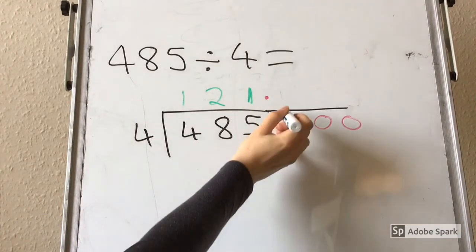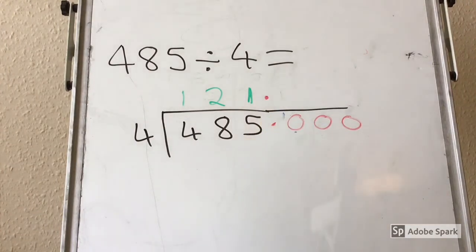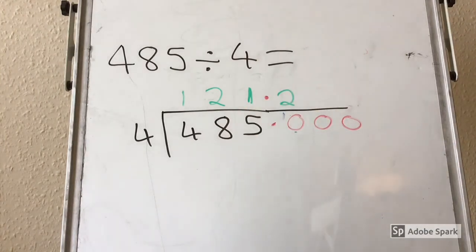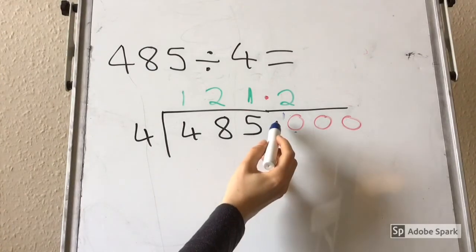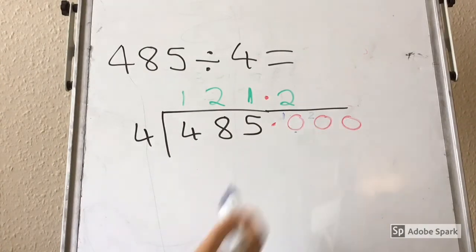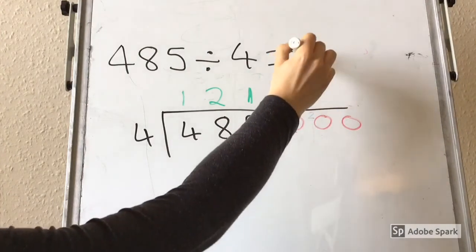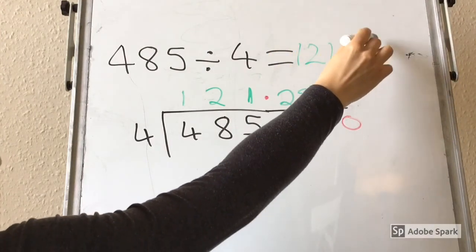You might have known that the decimal equivalent to 1 quarter is 0.25, but if you didn't, you can carry the 1 across and ask yourself how many times 4 goes into 10. 2 times 4 is 8, so we need to carry the 2 across. How many times does 4 go into 20? It goes in 5 times, so a big well done if you got 121.25.